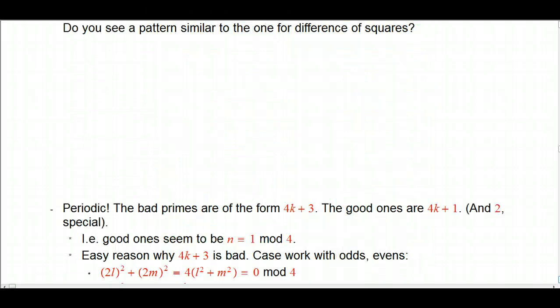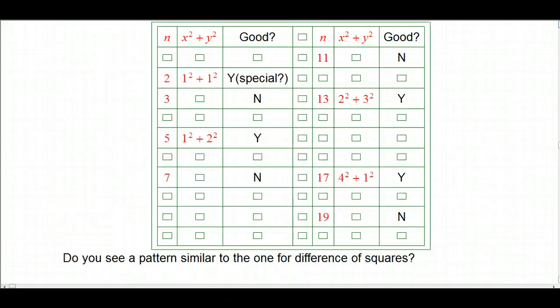And it's because they're periodic. The bad ones are the ones that are of the form 4k plus 3. The good ones are of the form 4k plus 1. And 2, which we already expected was probably going to be special. But among the odd primes, if you look at 3 and 7 and 11 and 19, those are all 1 less than a multiple of 4, or equivalently 3 more than a multiple of 4. And the ones that are good are the ones that are 1 mod 4.